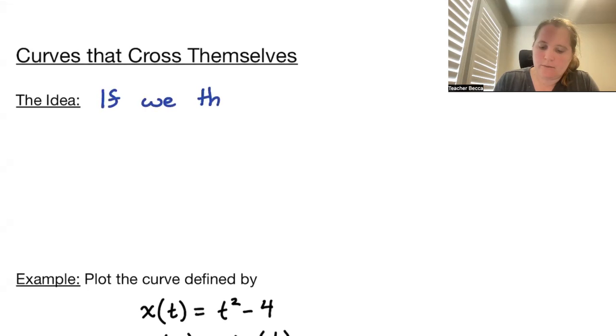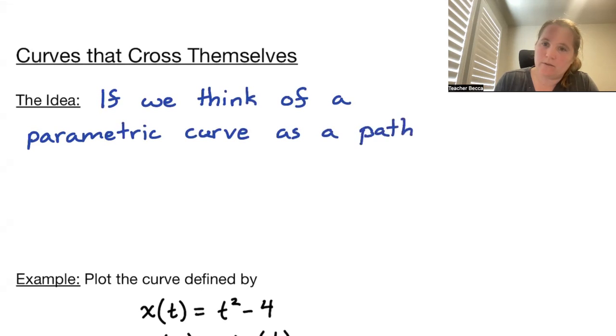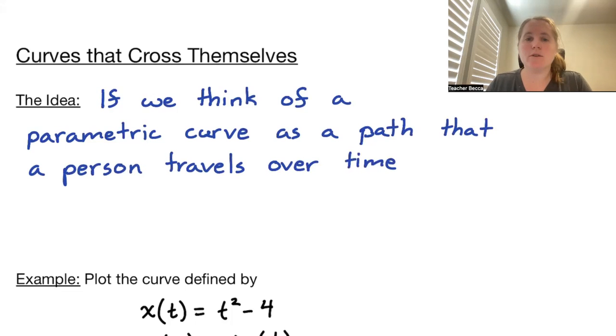So if we think of a parametric curve as a path that a person travels over time, then it is completely possible for the person to land on the same point at multiple different points in time.